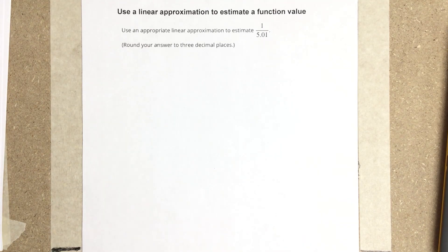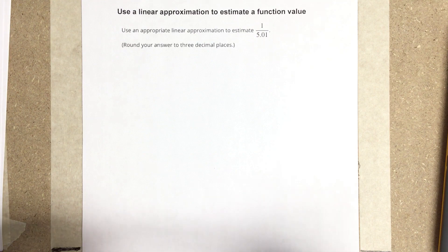In this video, we're going to use a linear approximation to estimate a function value. Use an appropriate linear approximation to estimate 1 over 5.01.